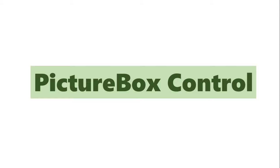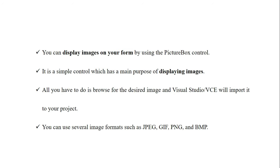So let's first see what is meant by the PictureBox control and what is its use. The PictureBox control is basically used to display images on the form. It is a simple control whose main purpose is displaying images. You have to just browse for the desired image, open Visual Studio, open the form, and import the image into your project — then you can insert the image in a PictureBox or on a form.